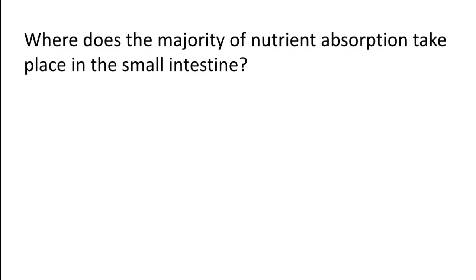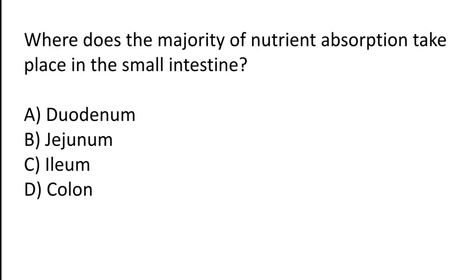Where does the majority of nutrient absorption take place in the small intestine? Option A: Duodenum. Option B: Ileum. Option C: Colon. The correct answer is Option B — the majority of nutrient absorption takes place in the duodenum of the small intestine.